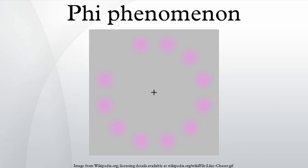The Phi Phenomenon is the optical illusion of perceiving a series of still images, when viewed in rapid succession, as continuous motion. Max Wertheimer defined this phenomenon in 1912. The Phi Phenomenon and persistence of vision together form the foundation of Hugo Münsterberg's theory of film and are part of the process of motion perception.